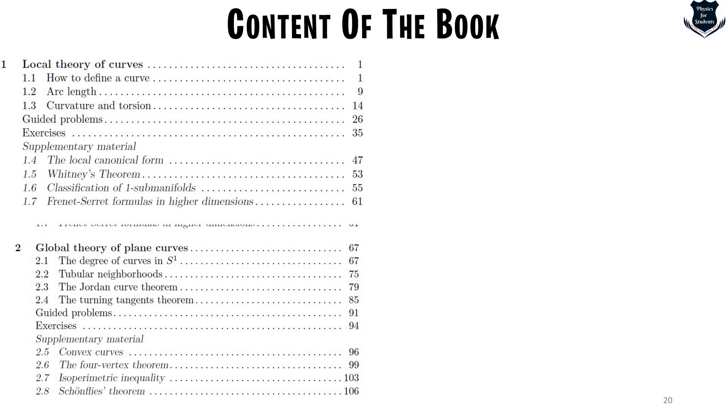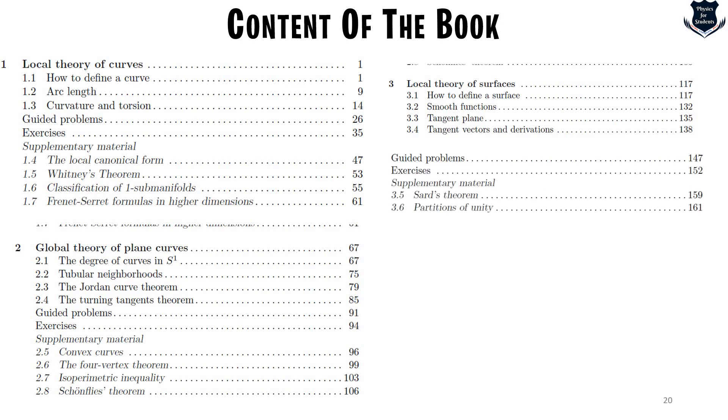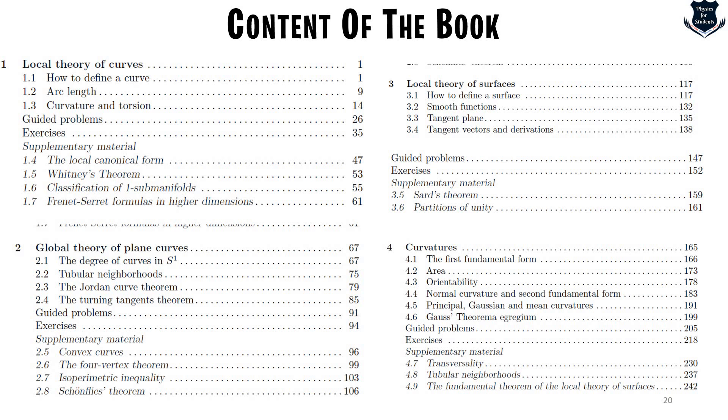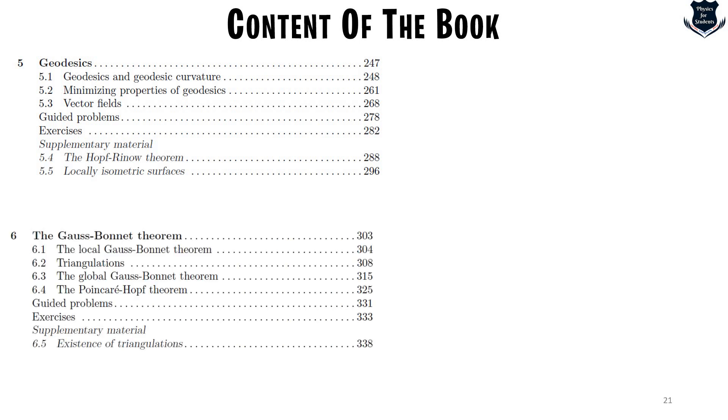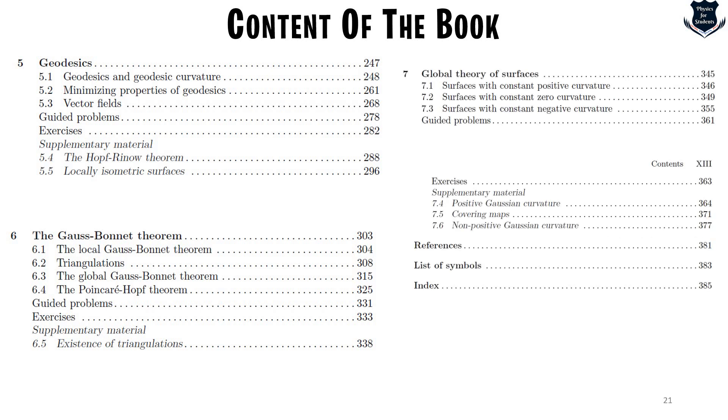Then it moves to the local theory how to define smooth functions etc then there are guided problems onto that and then it moves to curvature where the first fundamental form, Gauss's theorem, Egregium principle, Gaussian mean curvatures all these things are dealt with. Then it moves finally to geodesics, vector fields etc then there are exercises then it moves to Gauss-Bonnet theorem, triangulations etc exercise and supplementary then is close to global theory of surfaces and finally concludes with exercises and reference and list of symbols. So you see everything that you need to learn about curves and surfaces are covered over here nothing more nothing less absolutely up to the content.